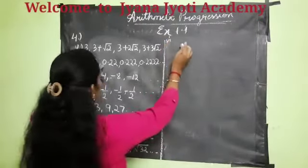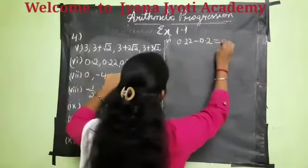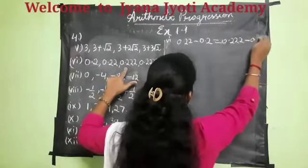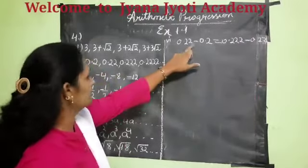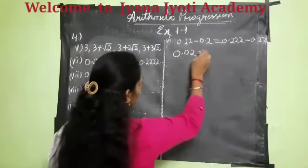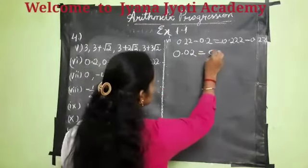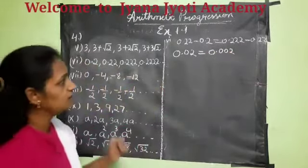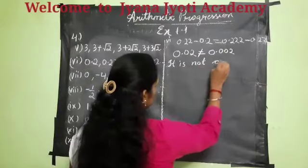The next question, sixth one. So 0.22 minus 0.2 should be equal to 0.22 minus 0.22, which gives us 0.002. So tell me whether these both are equal? No, they are not equal. So you can say that it is not an AP.